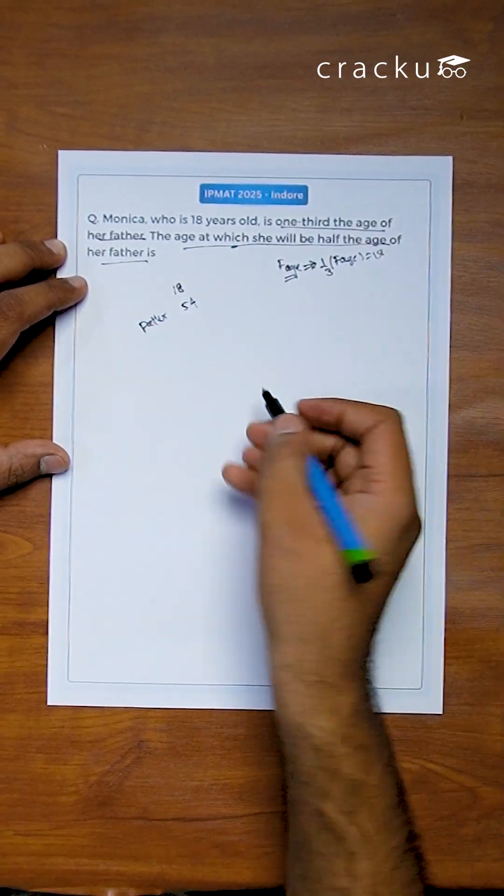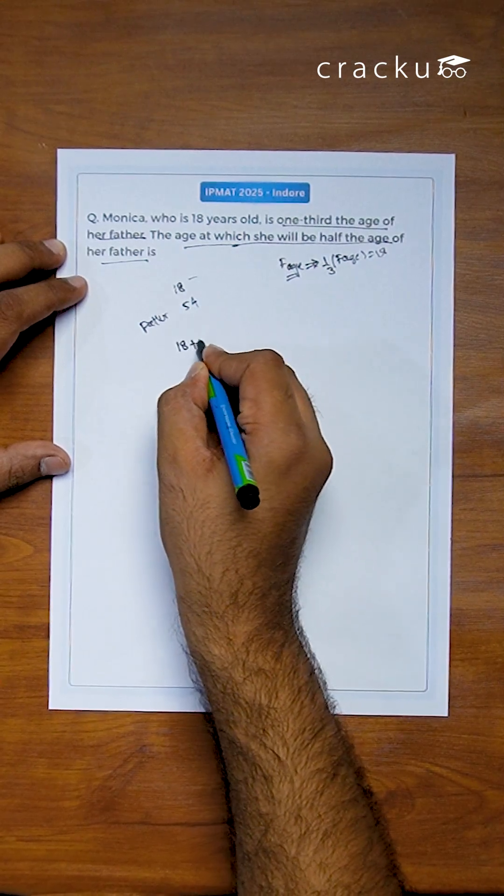So let us say after x years, after the current x years, Monica will be 18 plus x, her father would be 54 plus x.